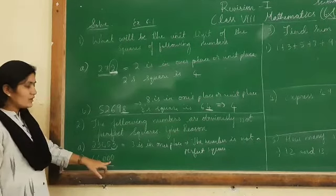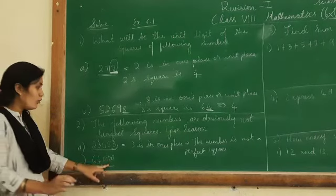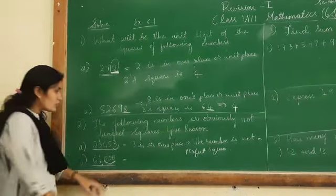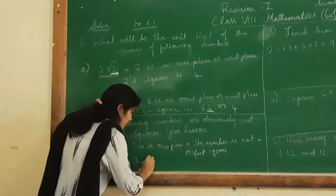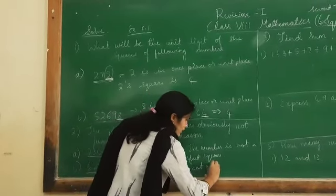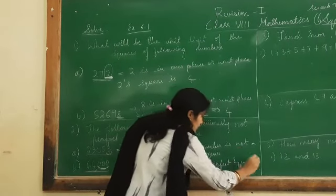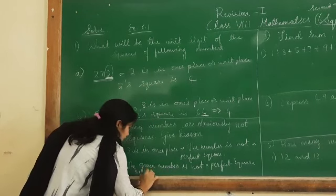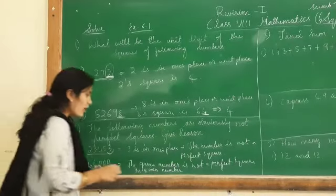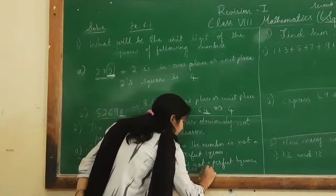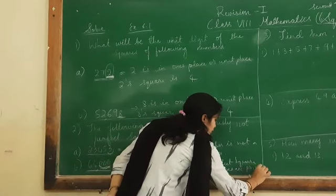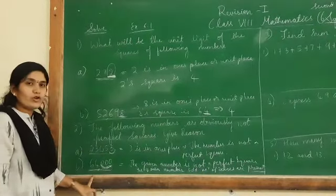Here, this number is 64,000. We can say the number ends with 0, but we need to check further. In this number, there are three zeros — 1, 2, 3 zeros in 64,000. Therefore, the given number is not a perfect square, because the number of zeros present in the given number is odd. If you have 3 zeros, the given number will not be a perfect square.